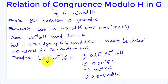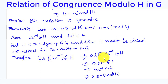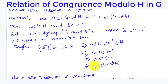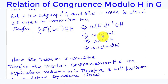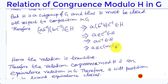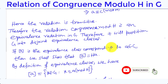Therefore, (A·B⁻¹)·(B·C⁻¹) ∈ H, which implies A·(B⁻¹·B)·C⁻¹ ∈ H, and thus A·C⁻¹ ∈ H, which implies A ≡ C (mod H). Hence, the relation is transitive.